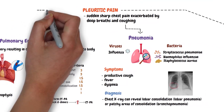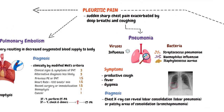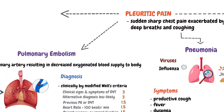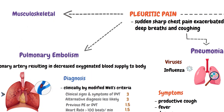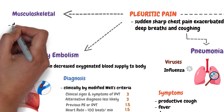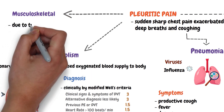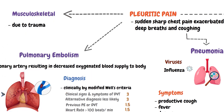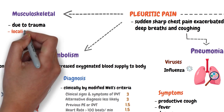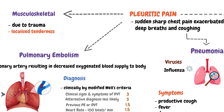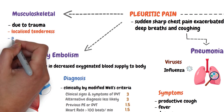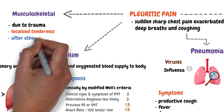Apart from pneumonia and pulmonary embolism, pleuritic pain can also be musculoskeletal pain arising due to trauma. Examination would reveal localized tenderness, but this diagnosis is only made after other causes are excluded.